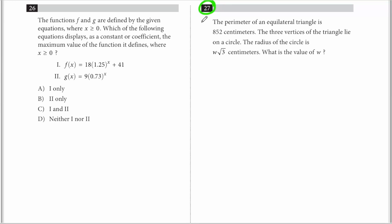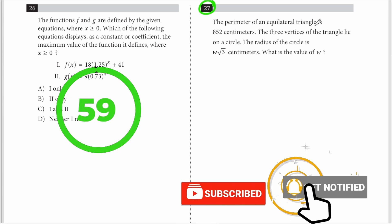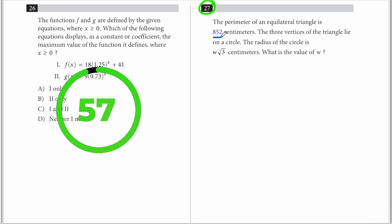How can you do this problem in 60 seconds or less? The perimeter of an equilateral triangle is 852 centimeters. The three vertices of the triangle lie on a circle. The radius of the circle is w√3. What is the value of w?